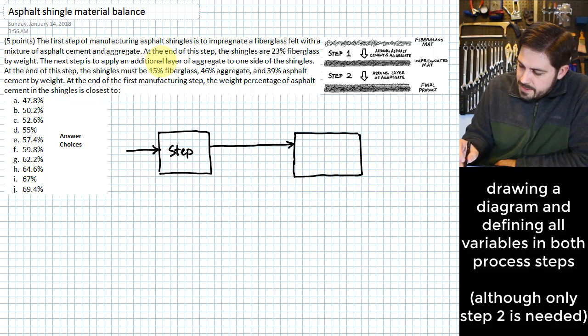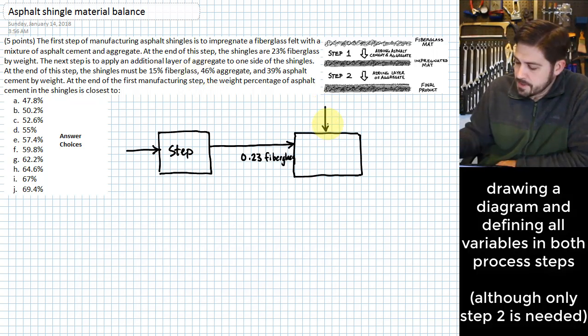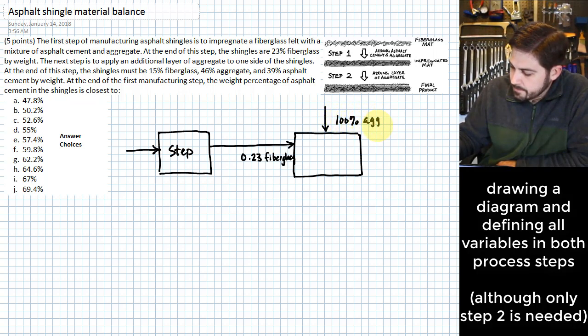And what it says here is that at the end of the first step, the shingles are 23% fiberglass by weight. So however much we've got coming in right here, we are 23% fiberglass. And then the next step is to apply an additional layer of aggregate to one side of the shingles. What's interesting about this stream of something is that it is 100% aggregate.